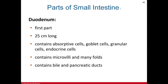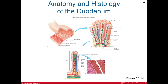The duodenum is the first part of the small intestine and is 25 centimeters long. The epithelium of the mucosa layer is simple columnar epithelium with microvilli, which increase the surface area for better absorption. The duodenum contains four major cell types: absorptive cells, goblet cells, granular cells, and endocrine cells. It also contains microvilli, many folds, and bile and pancreatic ducts — this is where the liver, pancreas, and gallbladder empty their secretions.